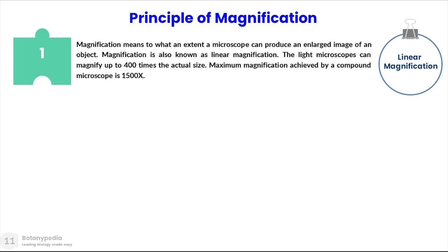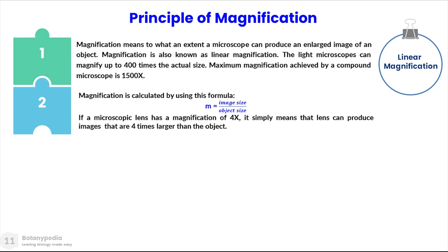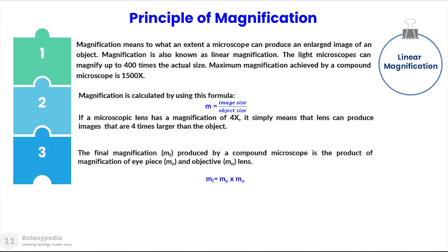Now let us understand the principle of magnification. Magnification refers to the extent to which a microscope can produce an enlarged image of an object; it is also known as linear magnification. A light microscope can magnify up to 400 times the actual size, and the maximum magnification achievable by a compound microscope is 1500x. The formula is: m = image size divided by object size. A lens with 4x magnification produces images four times larger than the object. The final magnification of a compound microscope is the product of the eyepiece magnification and the objective lens magnification: m_f = m_e × m_o.